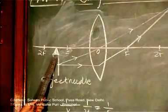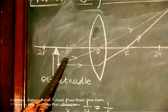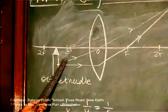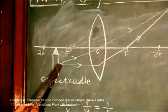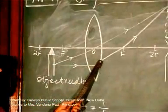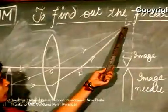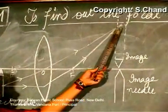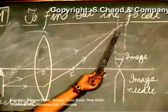If I keep the object needle between 2f and f, then according to the rules, I should be getting its image beyond 2f after convergence. These two rays, after convergence, meet at this point. It means I will be getting the image of the object needle at this position.